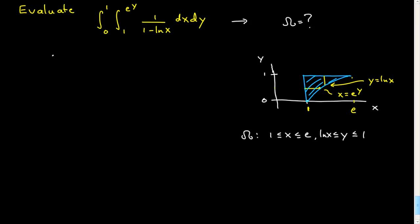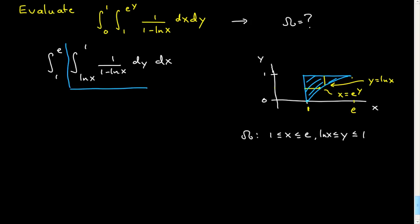So now we just read off: x goes between 1 and e, y goes between log x and 1, with the integrand 1 minus log x, dy dx. You'll see how nicely it was set up and how everything just collapses at this point. So that finishes this off. You need to practice these as with all things. And mentally, this is the question you have to ask — and always draw a sketch.